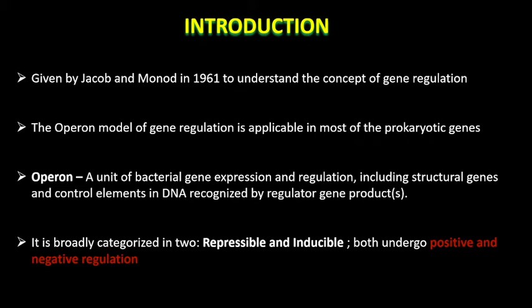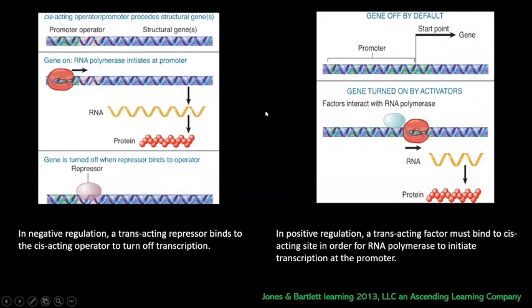It falls under two categories – repressible and inducible – which undergo both positive as well as negative regulation. This slide depicts the positive and negative regulation of lac operon. In case of negative regulation, the repressor binds to the operator and prevents a gene from being transcribed. While in case of positive regulation, a trans-acting factor binds to the cis-acting site to increase the affinity of RNA polymerase so that it binds to the promoter and transcribes the structural genes.